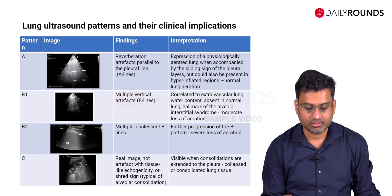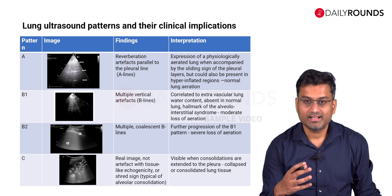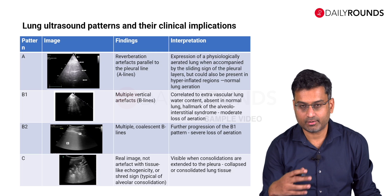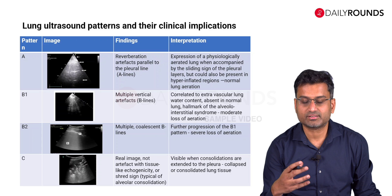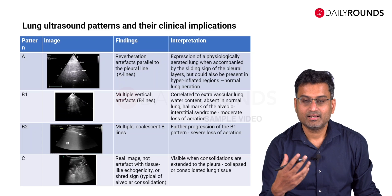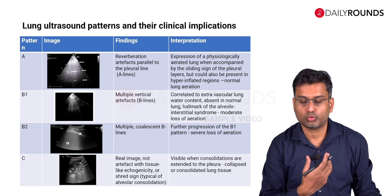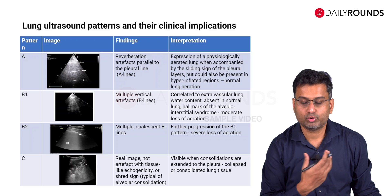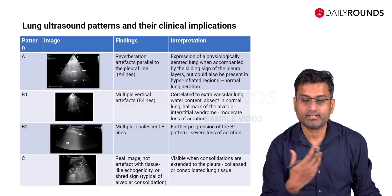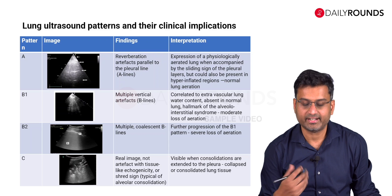Lung ultrasound is good to assess lung aeration as well as loss of lung aeration. What lung ultrasound essentially does is image the lung at 6 thoracic zones on each side of the chest — total 12 thoracic zones, 6 on each side.